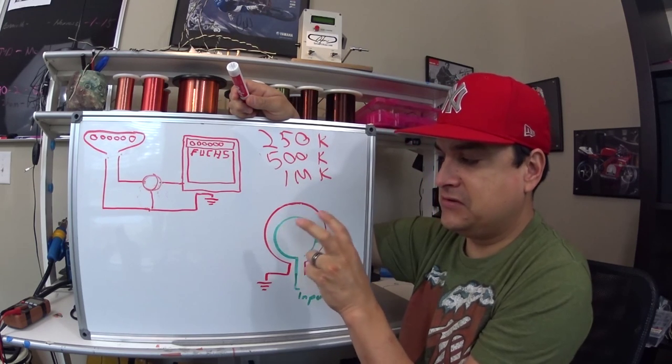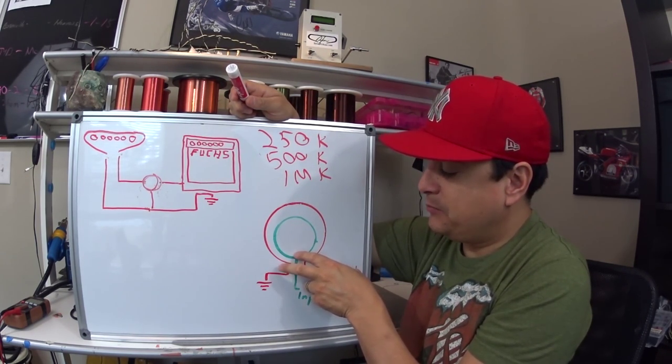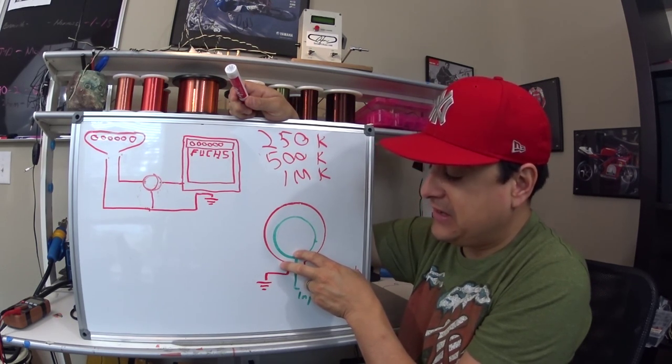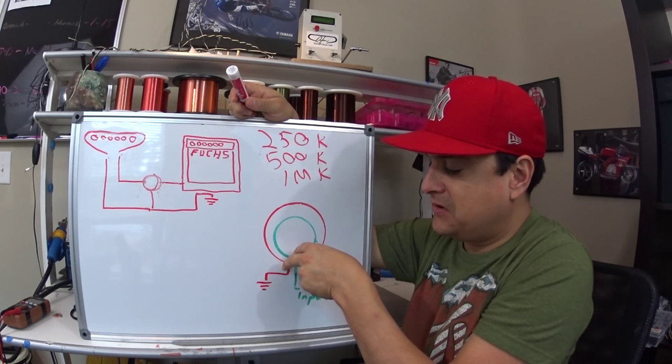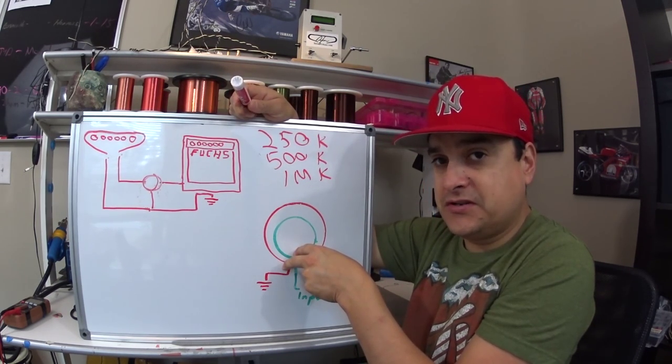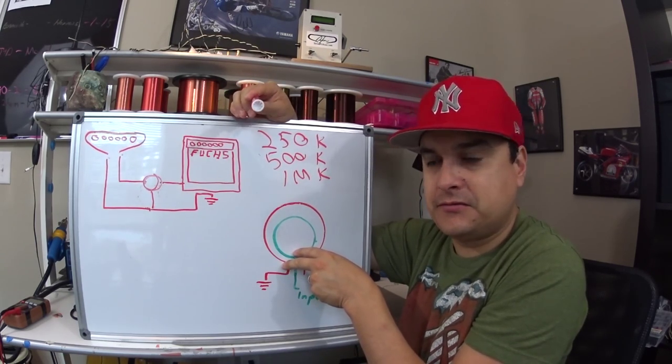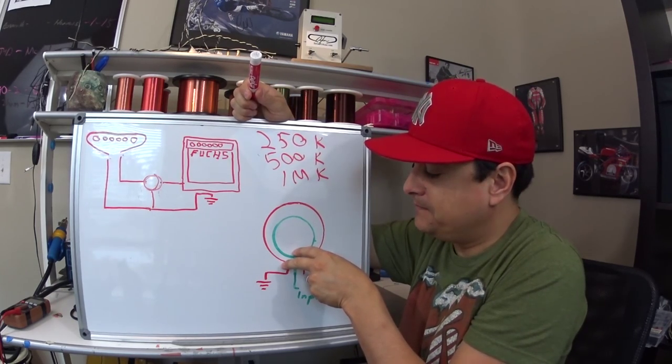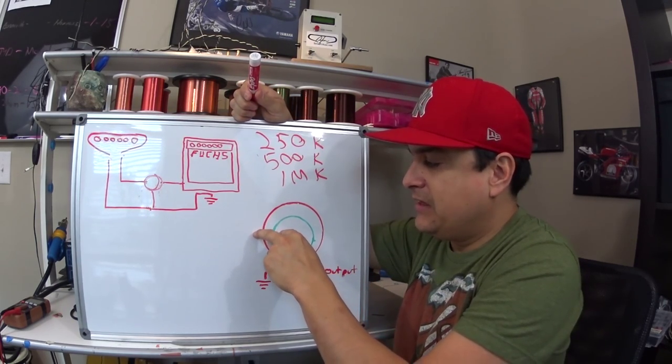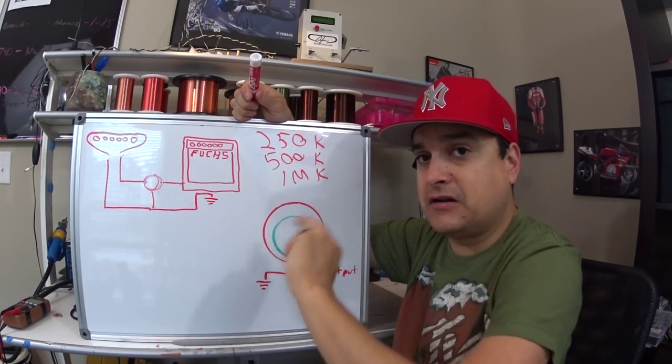And then there is an arm, a wiper, that basically takes the input signal and touches it to the outside and it creates a path. Now when the volume is all the way down, the shortest path to ground is present and you have basically a short to ground, just like we had over there a minute ago with that wire, no volume. As we go this way, the path to ground gets longer and the guitar gets louder.